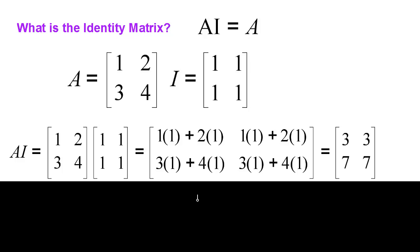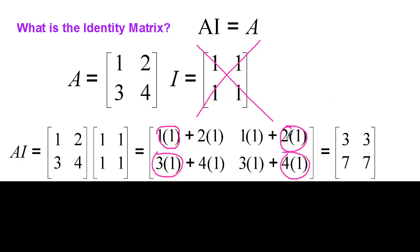If we multiply matrix A, which is 1, 2, 3, 4, by a matrix filled with ones, unfortunately we don't get the original matrix. We get 1 times 1 plus 2 times 1 is 3, and so on, giving us 3, 3, 7, 7 — which is certainly not our original matrix. So we have to put a big red X on the identity matrix being filled with ones. In the first column the first item is what we need, in the second column the second item — and we really need to get rid of the other elements.